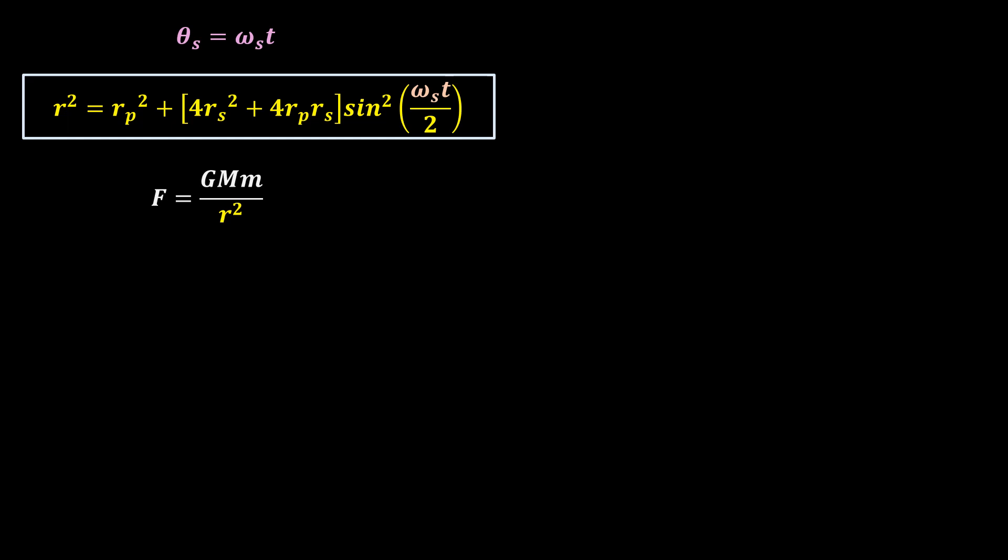For the case of the sun and the planets, the effective distance is given by the above equation, and this distance is not a constant but changes with time.